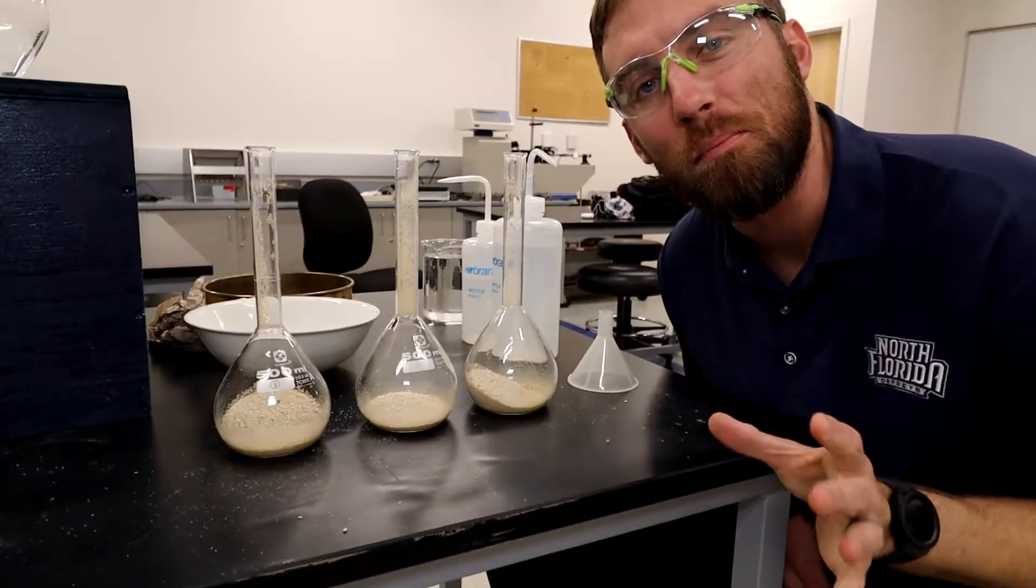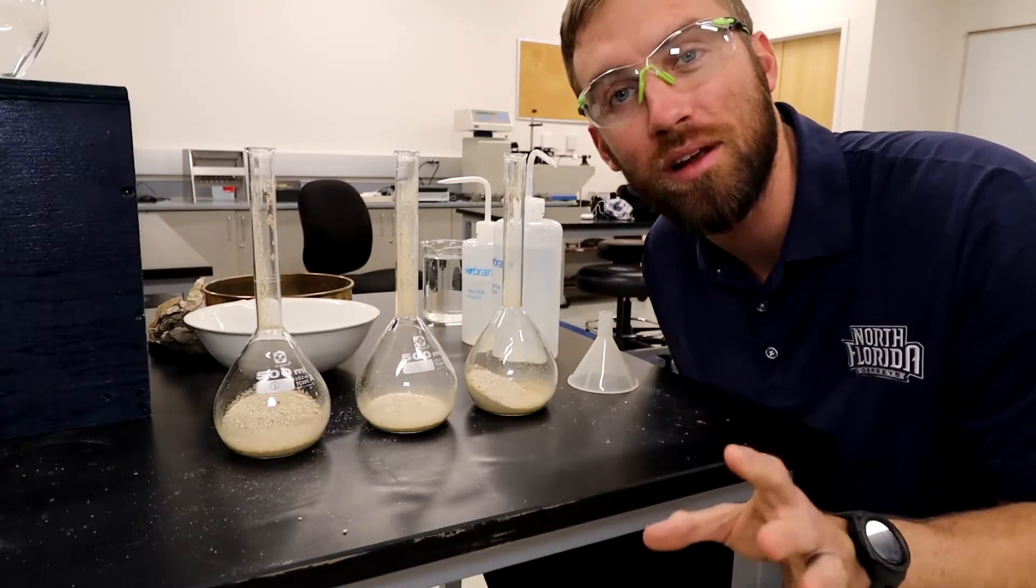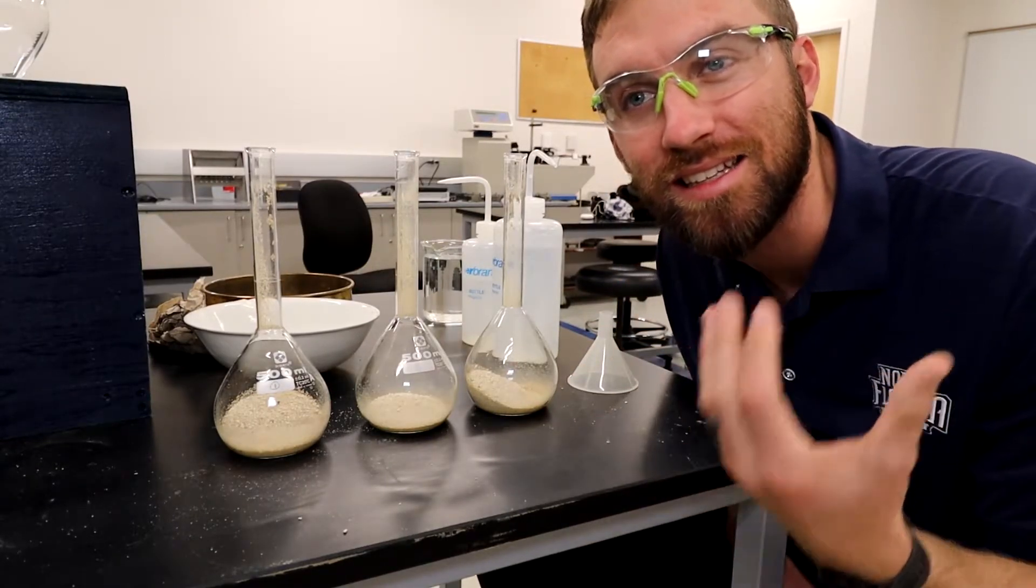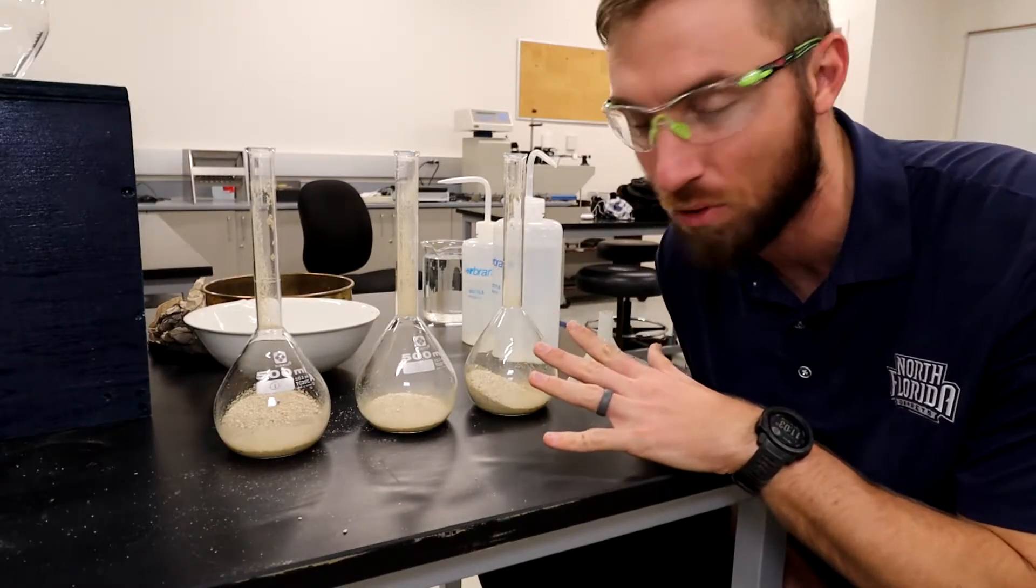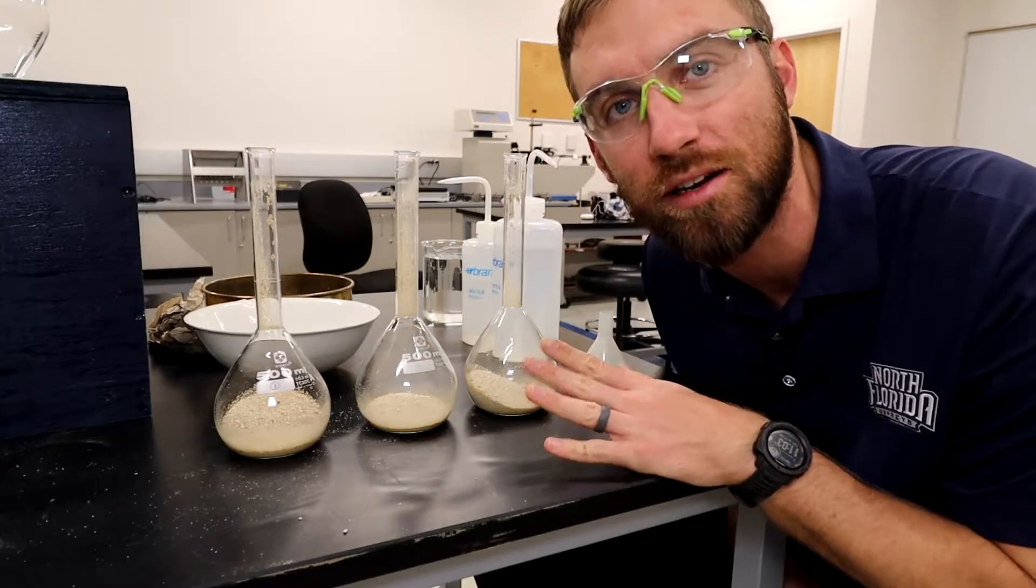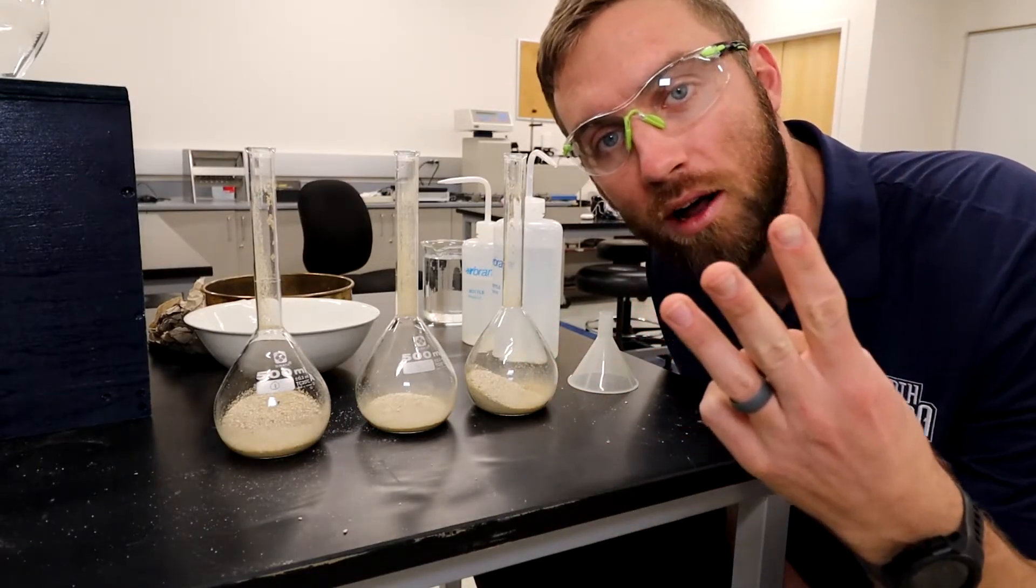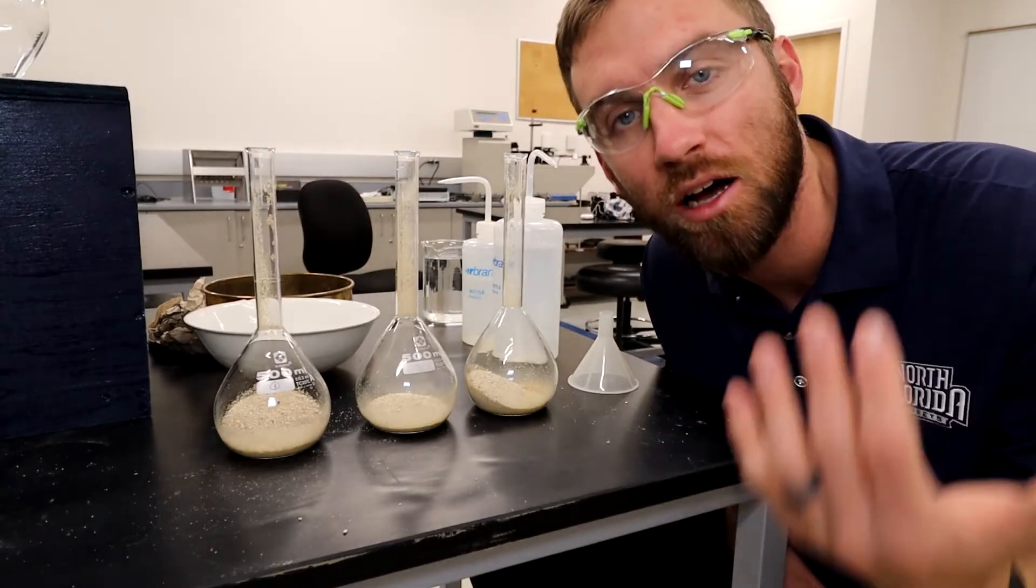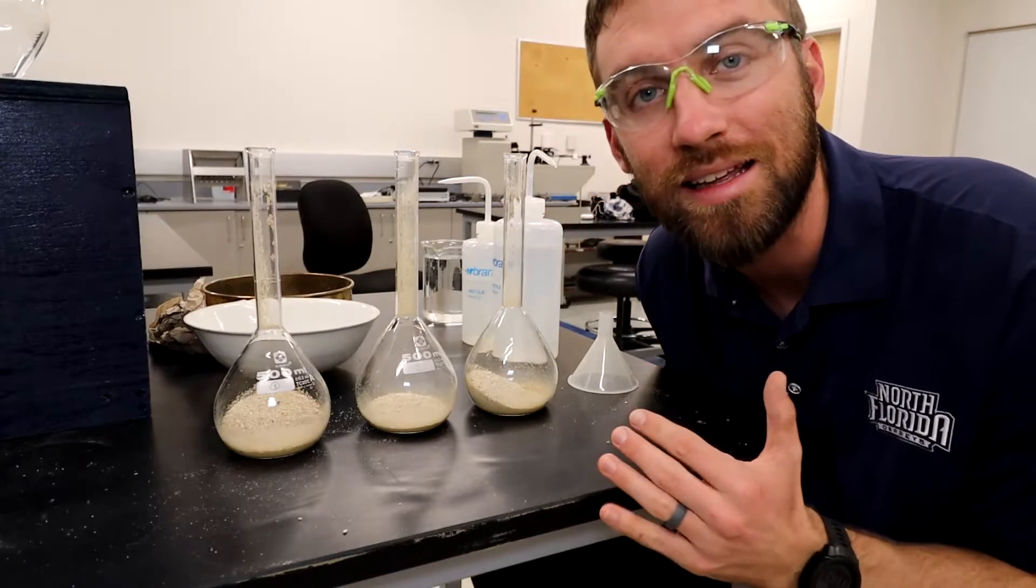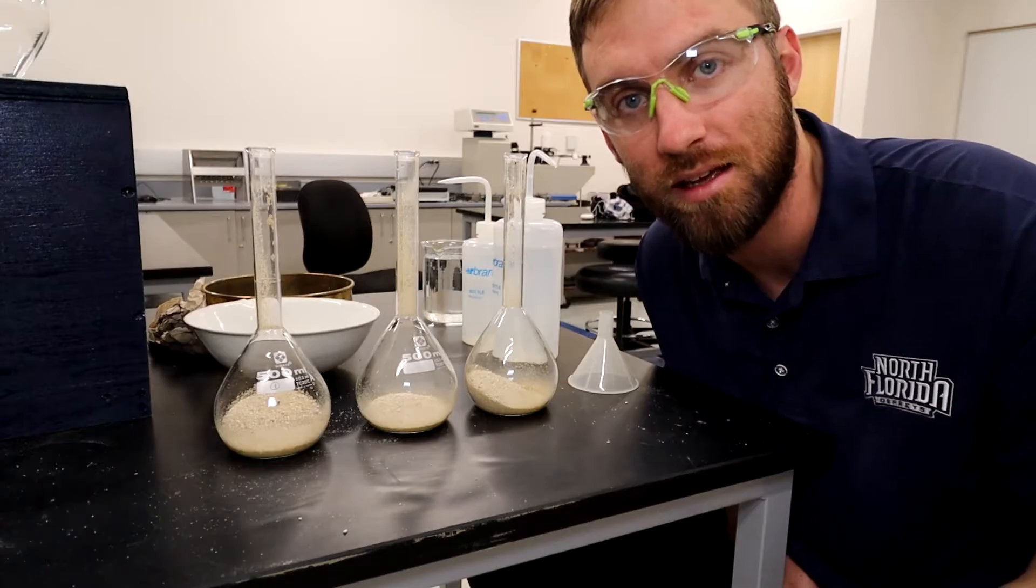Now we need to prepare the pycnometers for the vacuuming process. The point of the vacuuming process is to remove all the air voids and to get the sample 100% saturated. Remember soil is solid, air, and water. If we remove the air portion and we just have solids and water then that's 100% saturation. We need that state for the calculation of the specific gravity value.